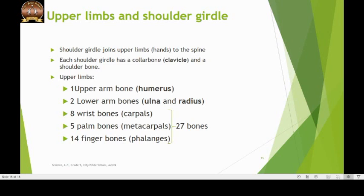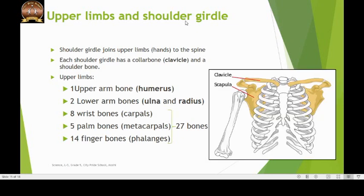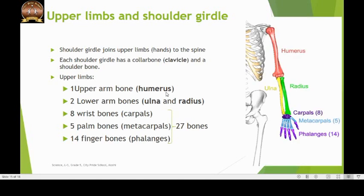Now let us learn about the parts of the appendicular skeleton: the arms or the upper limbs and the shoulder girdle. The shoulder girdle joins the upper limbs to the spine. Each shoulder girdle has a collar bone or clavicle that is attached to a shoulder blade or scapula at the back. A single bone called the humerus supports the upper arm. Two bones are present in the lower arm called the ulna and the radius, of which the ulna is the thicker and stronger bone. The hands are made up of 8 wrist bones or carpals, 5 palm bones or metacarpals and 14 finger bones or phalanges, making a total of 27 bones in a hand alone.